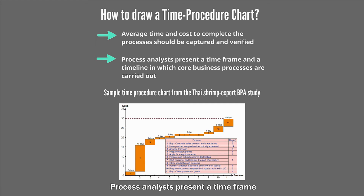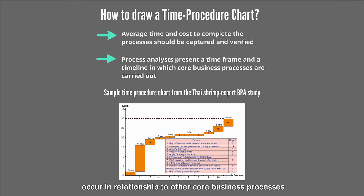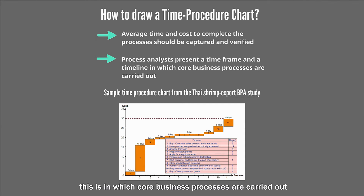Process analysts present a time frame — for example, showing the average time to complete the processes — and a timeline showing the time in which core business processes occur in relationship to other core business processes, either in sequential or in parallel. This is how core business processes are carried out in the time procedure chart.